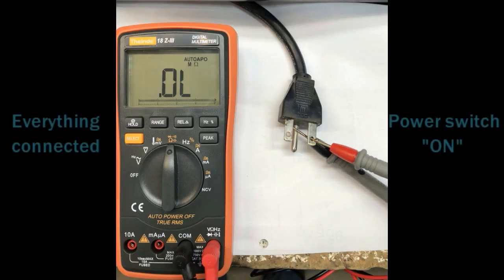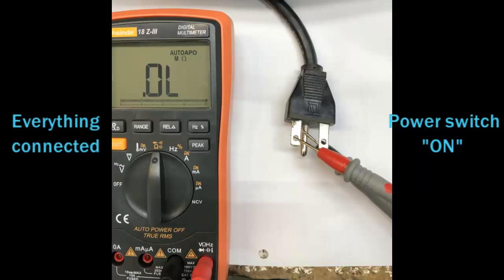While not ideal, you can check this with a simple regular ohmmeter that most of us have. You can measure, with everything connected and the power switch on, from either of the hot pins to the ground pin on the cord. If you show any resistance between either of the two hot pins and the ground pin, then you have a problem in the amplifier that needs to be addressed.